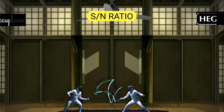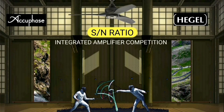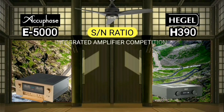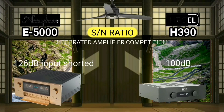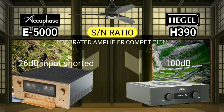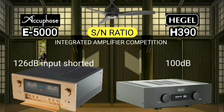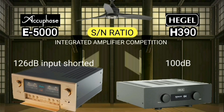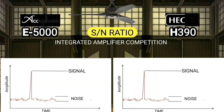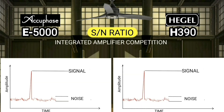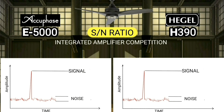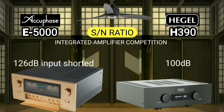Noise comes from imperfect grounding and induction of several components inside. The best way to measure signal-to-noise ratio is input short circuit at maximum volume.